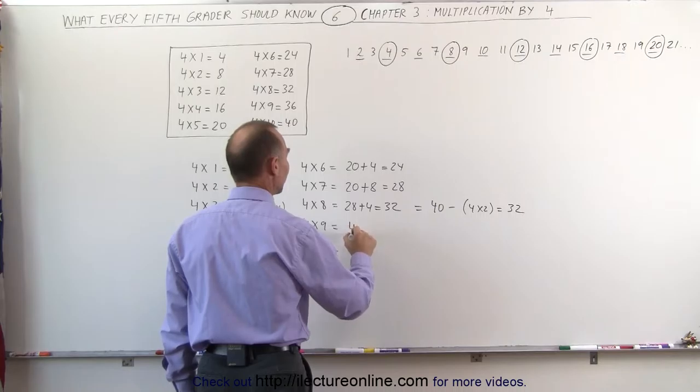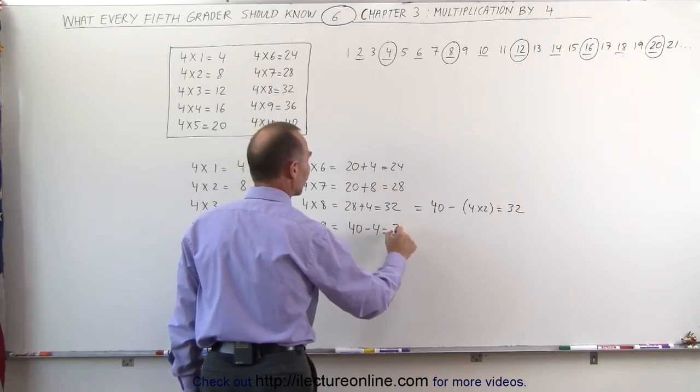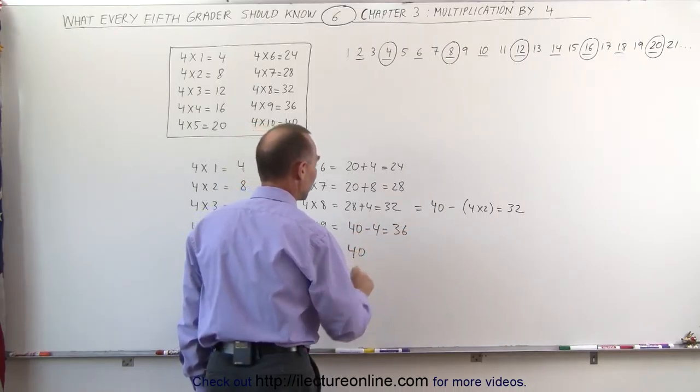4 times 9 would be 40 minus 4, which is 36. And of course, 4 times 10 is equal to 40.